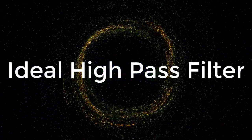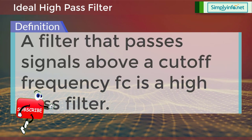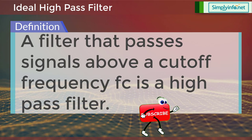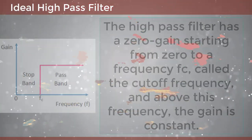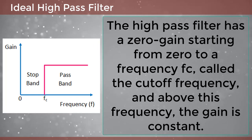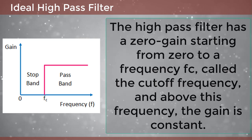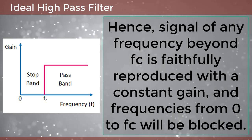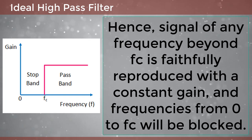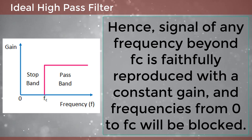Now let's look into the ideal high pass filter. A filter that passes signals above a cutoff frequency is a high pass filter. The high pass filter has a zero gain starting from 0 to a frequency FC called the cutoff frequency, and above this frequency the gain is constant. Hence, signals of any frequency beyond FC are faithfully reproduced with a constant gain, and frequencies from 0 to FC will be blocked.